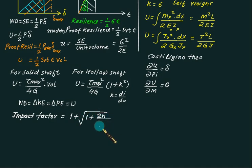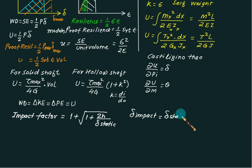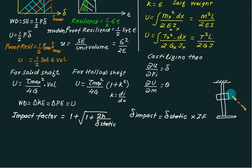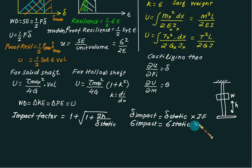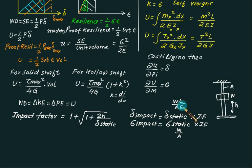The impact factor is given as 1 + √(1 + 2h/delta_static). Using the impact factor, we can find the deformation due to impact: delta_impact = delta_static × impact factor. For a rod fixed at the top with a collar at the bottom and a load dropped from height h, sigma_impact = sigma_static × impact factor. Here, sigma_static = W/A (area of rod) and delta_static = WL/(AE). In this way we can calculate delta_impact and sigma_impact.